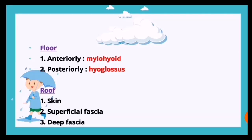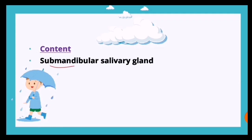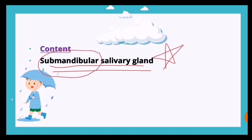The floor of the digastric triangle is formed anteriorly by the mylohyoid muscle and posteriorly by the hyoglossus. The roof is formed superficially by the skin, then the superficial fascia and deep fascia. The content is very important - it hosts the submandibular salivary gland.